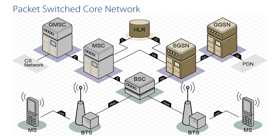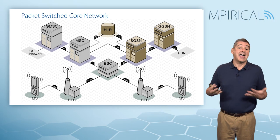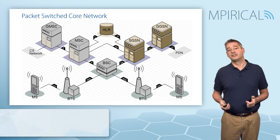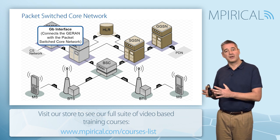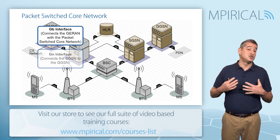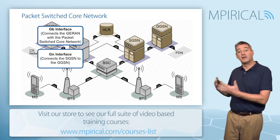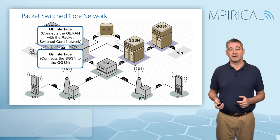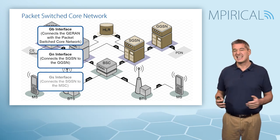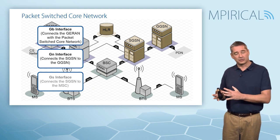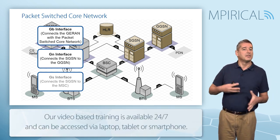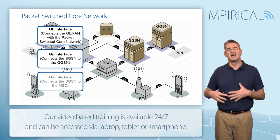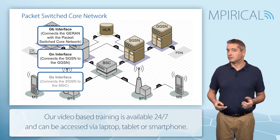The second element of our core network is the packet switch core network. It connects via several interfaces: the Gb interface links the packet switch core to the GRAN; the Gn interface links the various GPRS support nodes together; and possibly a Gs interface links the packet switch core to the circuit switch core, although in most networks today the Gs interface is seldom found.